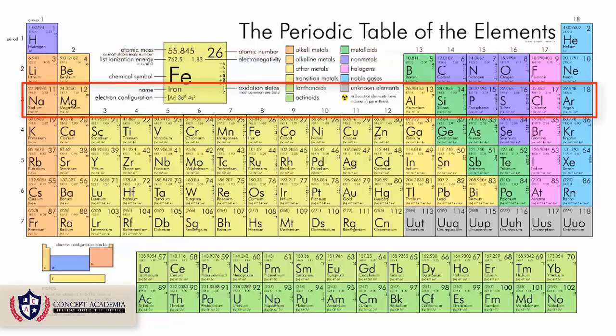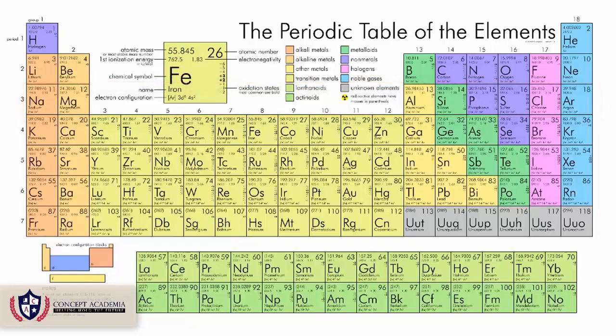This is period number three, from sodium to argon. These all have three shells in their atom. So this is a view of the periodic table before us, and the periodic table gives us a lot of information — a number of pieces of information we can extract from it.